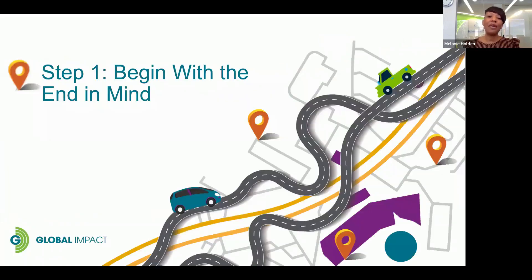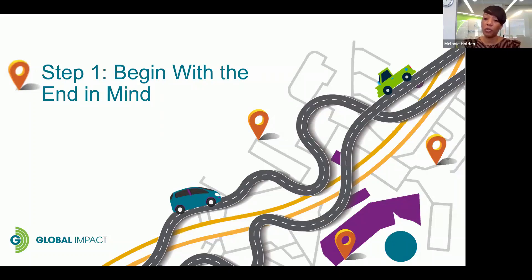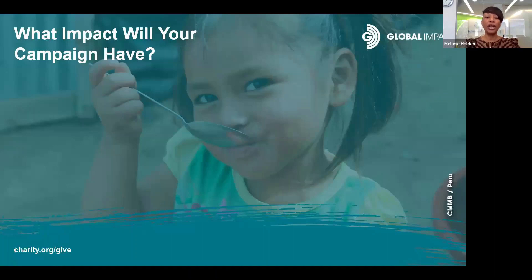Step number one: begin with the end in mind. Our team has a saying — successful campaigns don't just happen — just like you don't just happen to arrive at your desired destination. When you want directions on your GPS, you have to decide and enter your final desired destination. The same is true regarding planning your employee giving campaign. Start by envisioning how you want your campaign to end — what type of impact or success do you want that workplace giving campaign to have by the time you wrap things up?